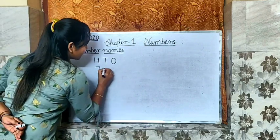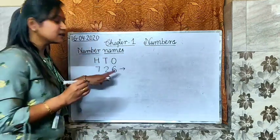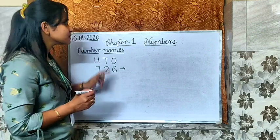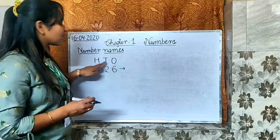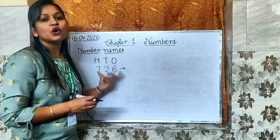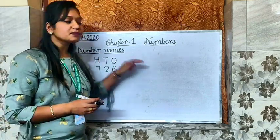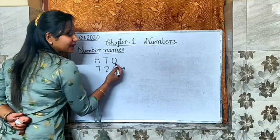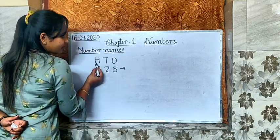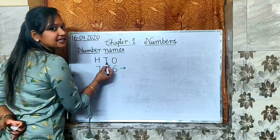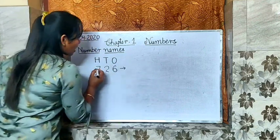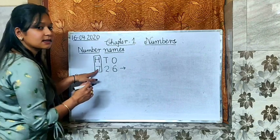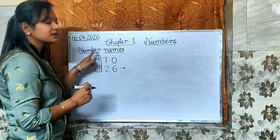So these numbers which I will be writing now are also having some names. We have taken 3 numbers here: 7, 2, 6. For writing the number names, the first thing we have to do is to write the place value or places over these numbers. We start our place value chart from 1's, 10's, 100's. O stands for 1's, T stands for 10's, H stands for 100's. So how our number name becomes? We read them together — first we read the number, then its place.